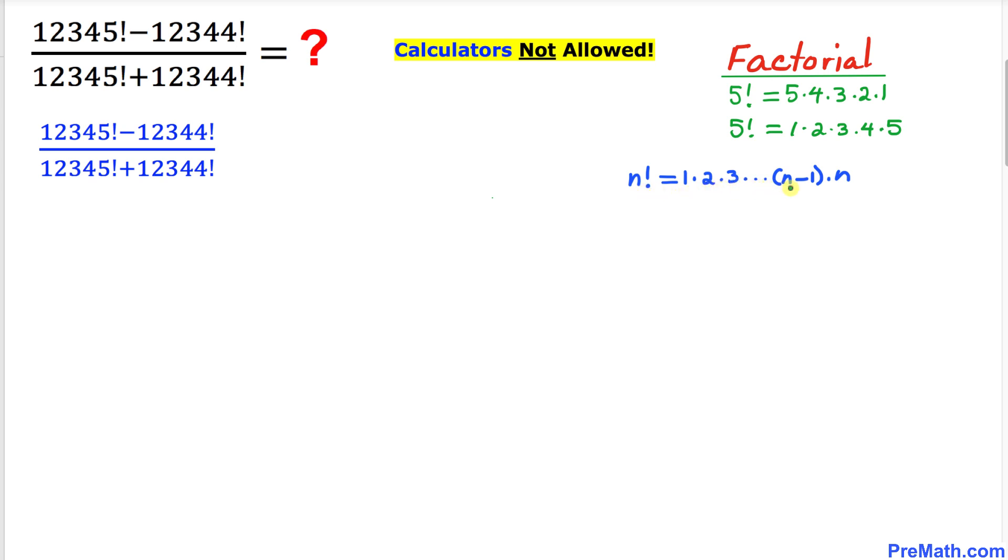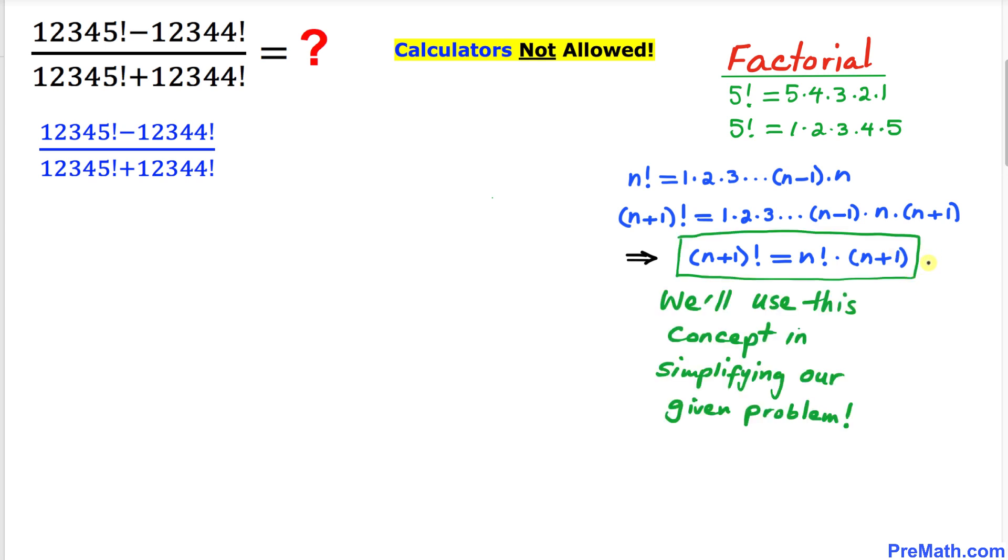If we generalize that, n factorial could be written as 1 times 2 times 3 all the way to n minus 1 times n. Likewise, n plus 1 factorial could be written as 1 times 2 times 3, keeps going on, n minus 1 times n times n plus 1. Let's focus on this part: 1 times 2 times 3 times n minus 1 times n. This is same as n factorial, so I'm going to replace this part by n factorial. Therefore, n plus 1 factorial equals n factorial times n plus 1. We are going to use this concept in simplifying this given problem.